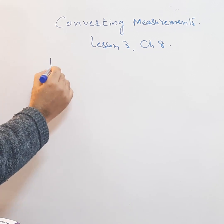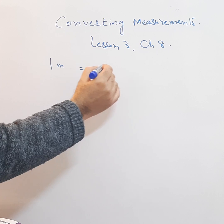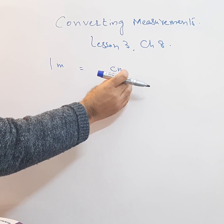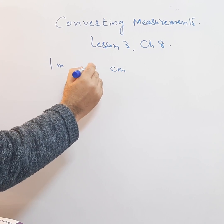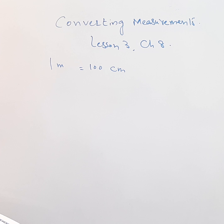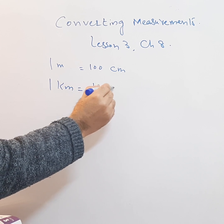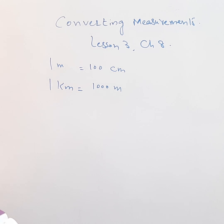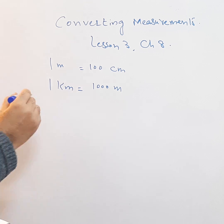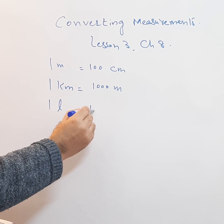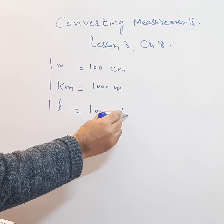You know that if there is 1 meter, centimeter is smaller. So 1 meter is equal to 100 centimeters. And 1 kilometer is equal to 1000 meters. These are the units used here. We also see that 1 liter is equal to 1000 ml.